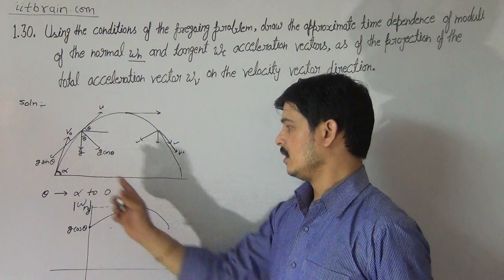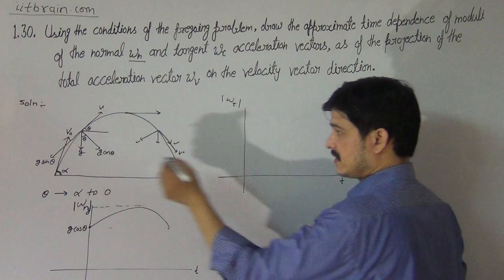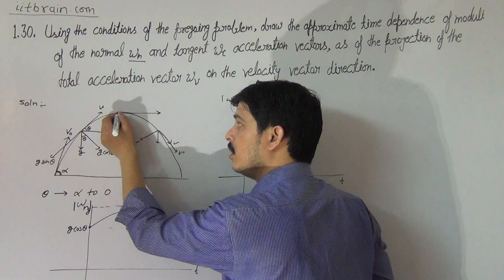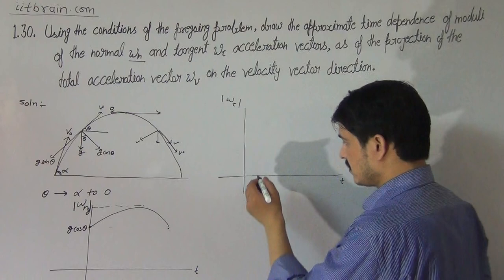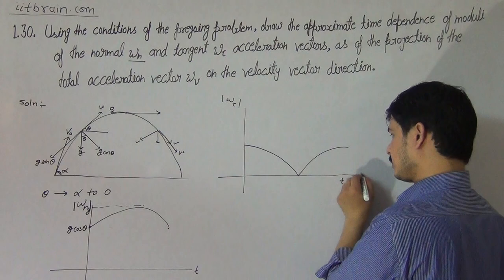Now a similar graph for modulus of tangential acceleration versus time. At the start, the tangential acceleration numerical magnitude is g·sin(alpha), which is greater than zero. At the top point it becomes zero because there is no component of gravity along the velocity direction at that point. After the top it increases again.